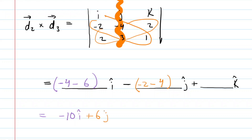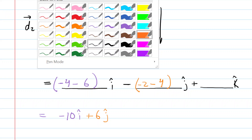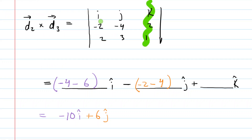Finally, we cover up the last column to calculate the k hat or z component. Cross multiplying: negative two times three is negative six, and two times negative four is negative eight. Subtracting a negative eight means we add eight. Combining negative six and positive eight gives positive two k hat. So the result of d2 crossed with d3 is negative 10 i hat, plus 6 j hat, plus 2 k hat.